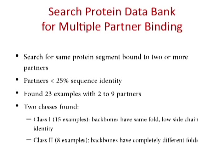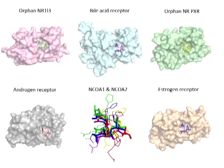Although the partners in the first class have low sequence identities, their backbones have a relatively similar fold, but with low side chain identity. There are 15 examples like this. On the other hand, there are eight examples in class two, and those proteins' backbones have completely different folds. In the first class, we see five partners bound to one chain. This is actually the nuclear receptor one and two, which have almost identical sequences but have the same binding motif.